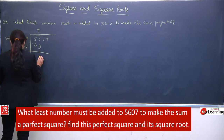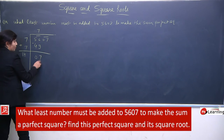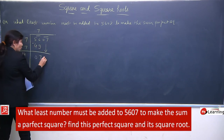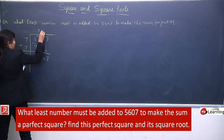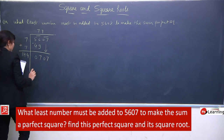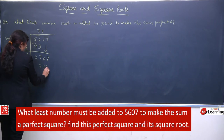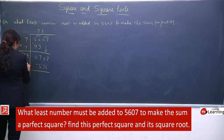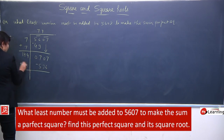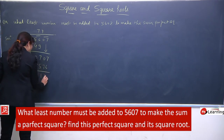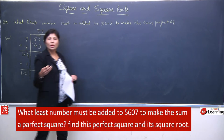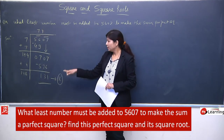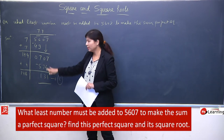56 mein se 49 subtract karne pe 7 milega. Yeh poora pair copy hoga. Now we have 707. Yahan aisa number choose karenge jisse nearest table mile. 144 × 4 = 576, aur 5 lete toh bada aata — isliye 144 × 4 = 576. So ye hoga 148. Isko subtract karne pe remainder milega — this is your remainder: 131. Agar least subtracted wala question hota toh hum 5607 mein se 131 subtract karte.